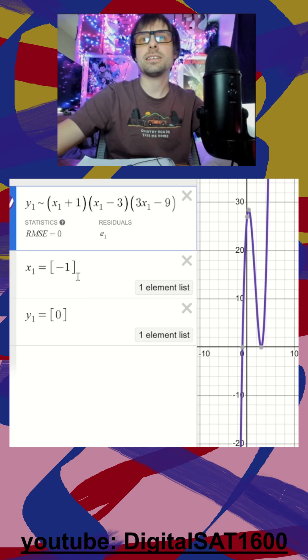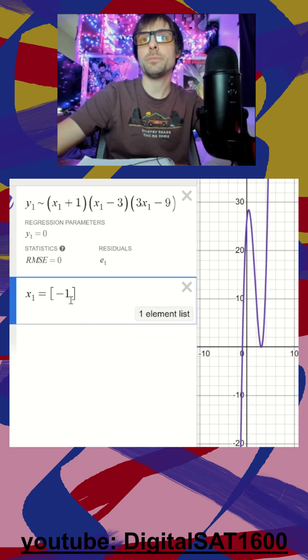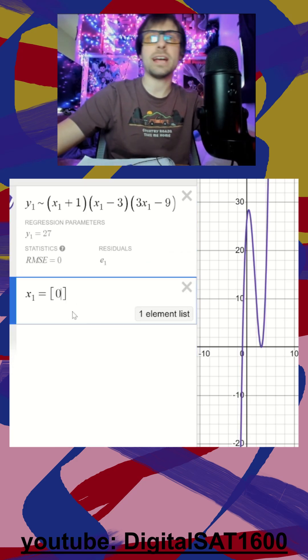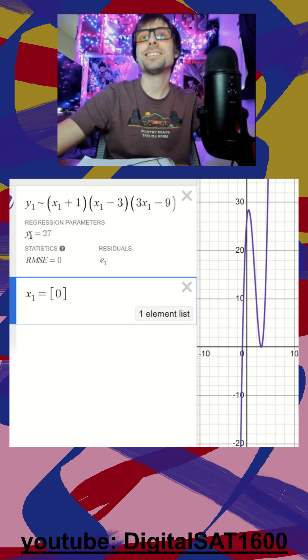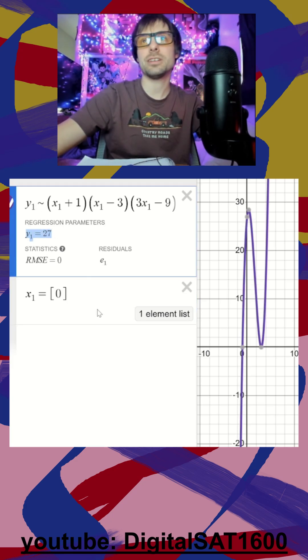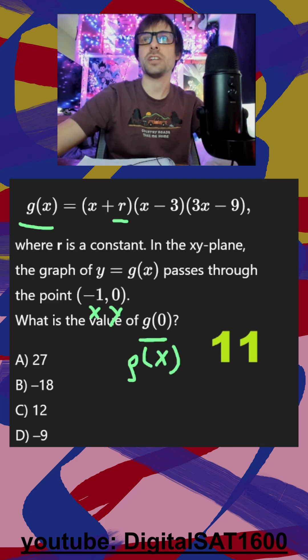And again, they're telling us x is zero. So we don't need to plug in a y value. We're going to say, okay, what happens when x is zero, and they want us to solve for y. You can see here it is right here, y one is going to equal 27. When x is zero, I jump back to my paper, and I know it's going to be A.